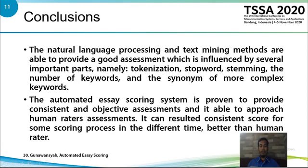The conclusion is that natural language processing and text mining methods are able to provide a good assessment, which is influenced by several important parts: tokenization, stopword removal, stemming, the number of keywords, and the synonyms of more complex keywords. The automatic essay scoring system is proven to provide consistent and objective assessment and is able to approach human assessment. It can result in consistent scores across multiple scoring processes at different times, better than human assessment.